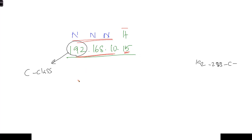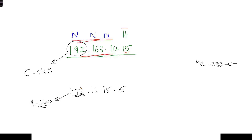Similarly, when we write an address like 172.16.15.15, by seeing this range we say this is a B class example, and in B class there are two network portions and two host portions.